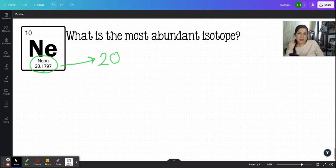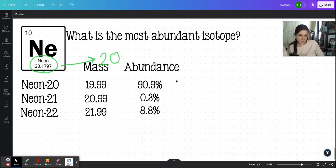And if we look back at that data, that's exactly what we see here. Neon 20 represents 90.9% of all of the neons in this sample that the chemists used. So this is a really good method. It works every time.